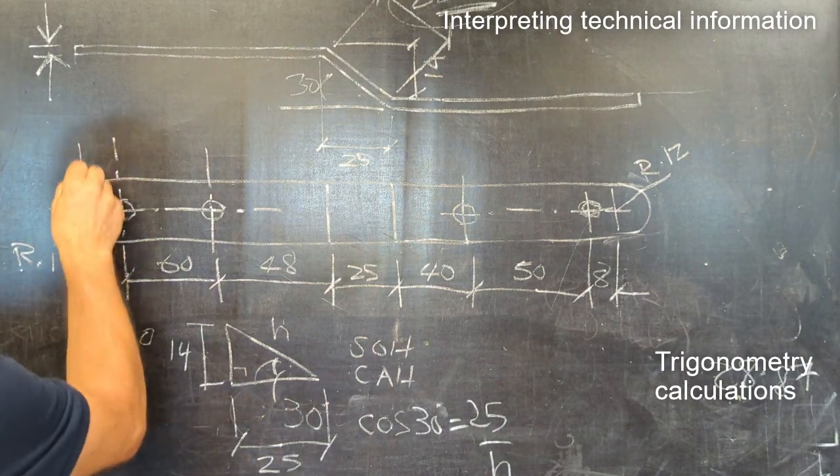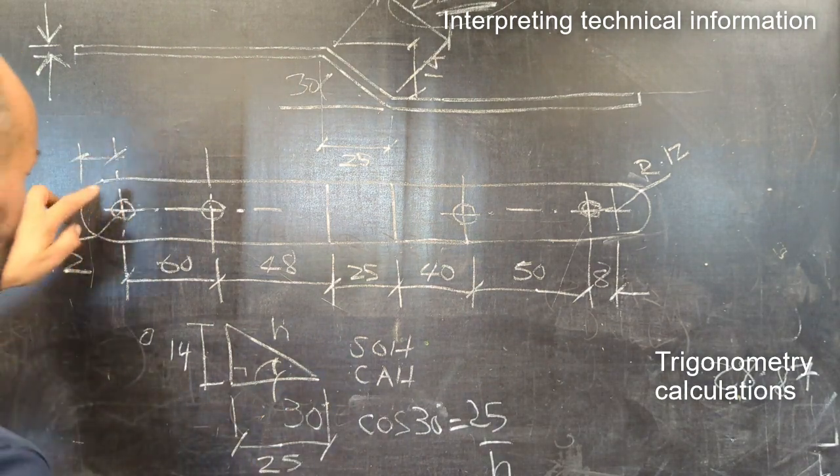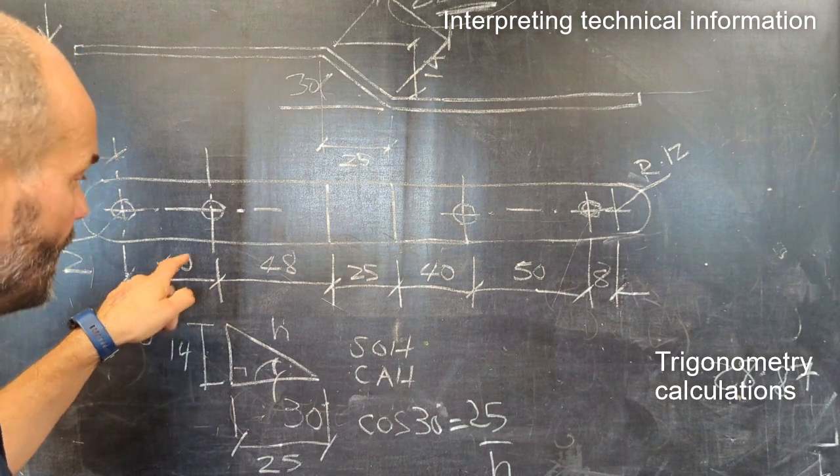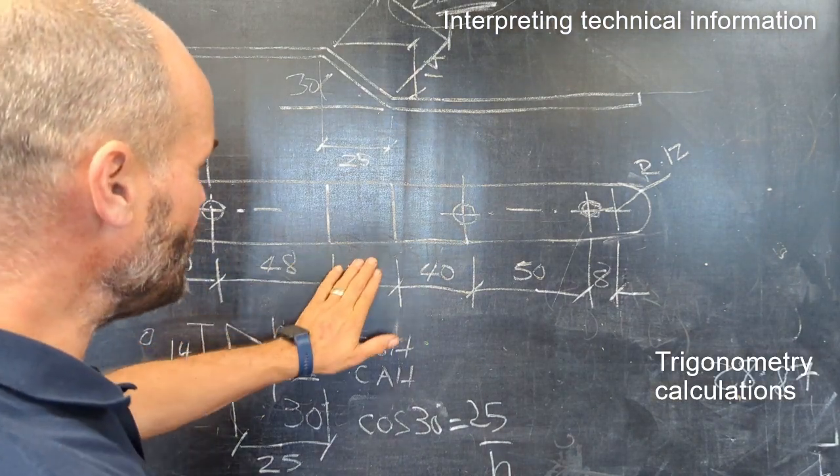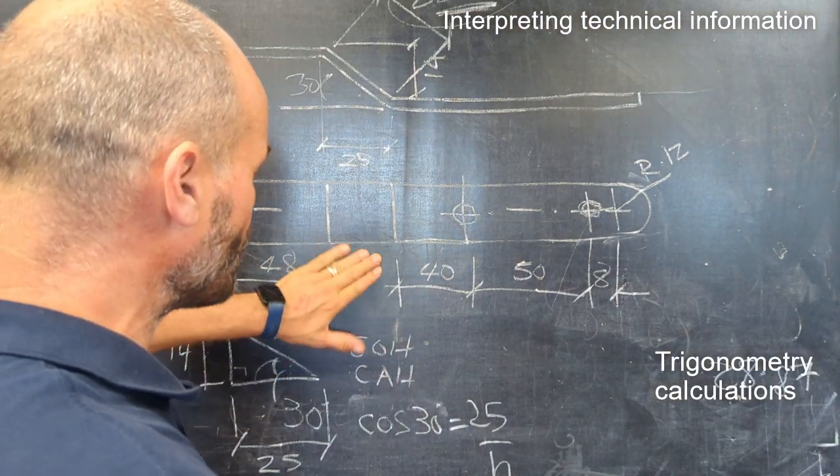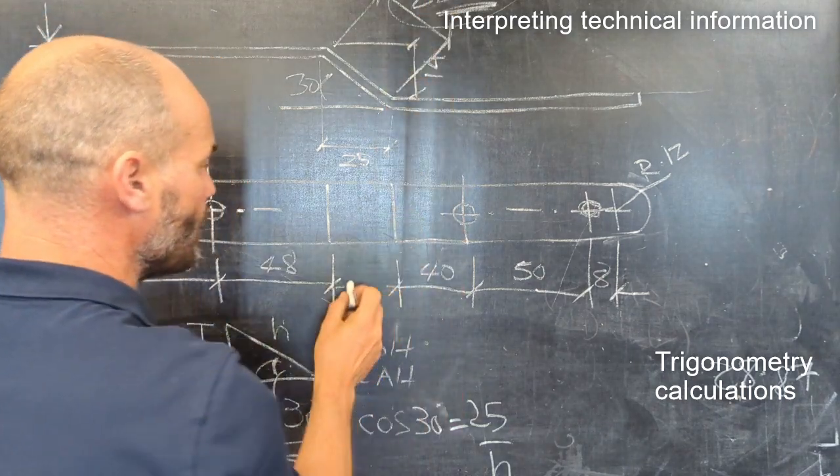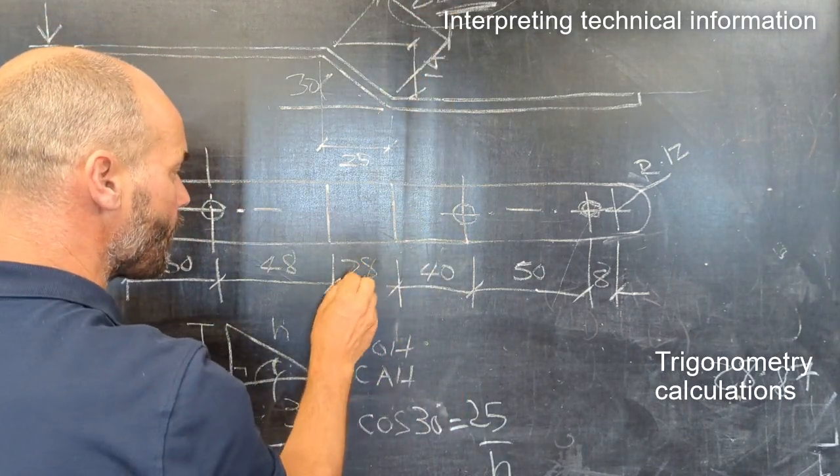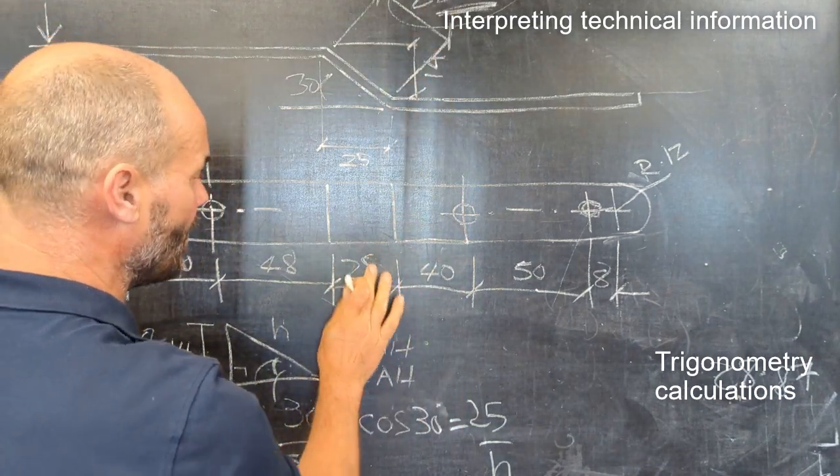From this end, you've got 12 millimeters to the first center. So 12 plus 60 plus 48, ignore the 25 - that's not a true length. The size we want for that is 28, or you could round up to 29.